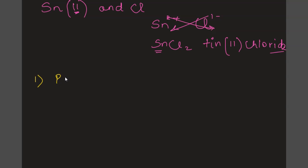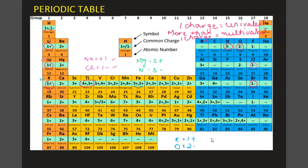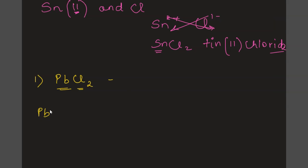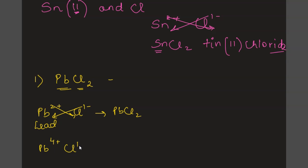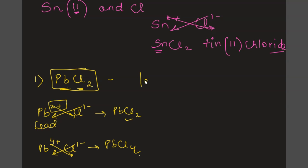Let's practice more examples. We are asked to name PbCl2. From the periodic table, Pb is lead and has two charges: two positive and four positive. Chlorine has one negative charge. Using Pb two positive with chlorine, crisscrossing gives PbCl2. Using Pb four positive with chlorine gives PbCl4. Since the question gives us PbCl2, this comes from lead with a charge of two positive. So the name is lead(II) chloride.